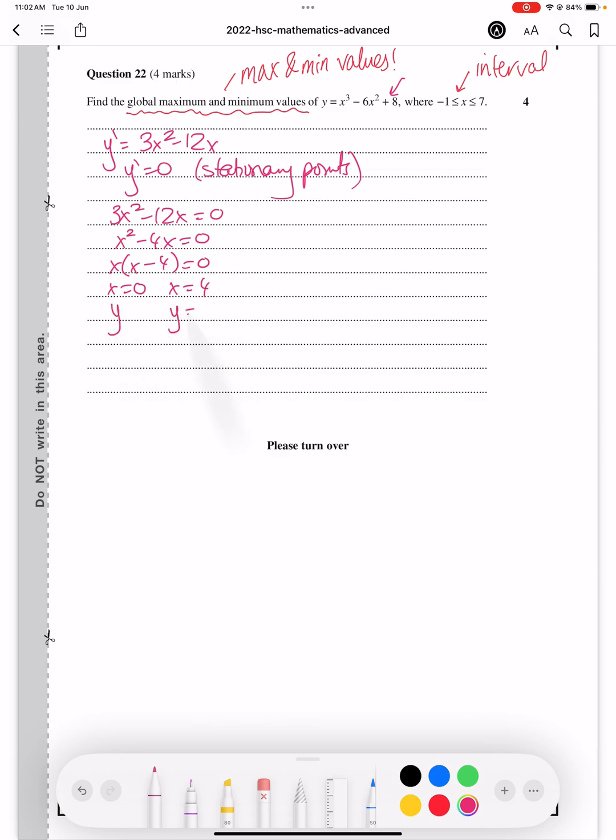Find the y values at those points by substituting them back into the original equation. We get y equals to 8 and y equals to minus 24. So (0, 8) and (4, -24) are our stationary points.